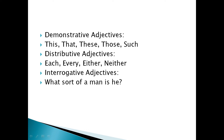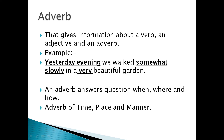Remember that adjectives give us information about nouns and pronouns and they answer questions like what kind, what color, what type, what size, etc. Now let's look at adverbs — the fifth part of speech. In school, we learned that adjectives give information about a noun, and adverbs give information about a verb. This is correct but only half correct, because adverbs can also give information about adjectives and other adverbs.